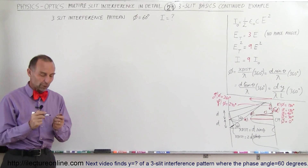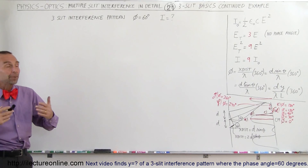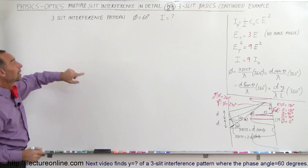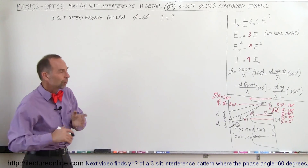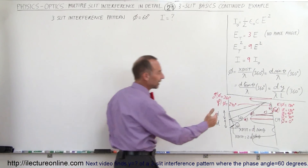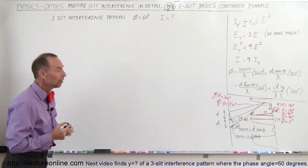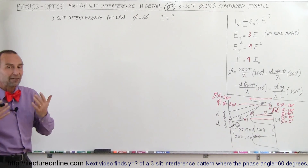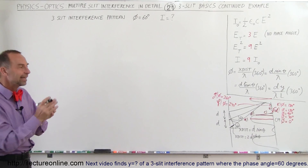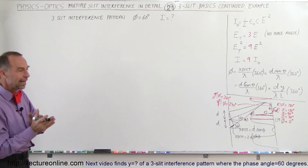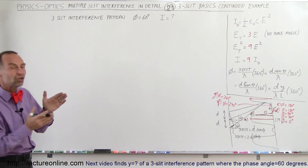Welcome to Electron Online. In this video we're going to see if we understand what we saw in the previous two videos by doing an example. We have a three-slit interference pattern, the phase angle is 60 degrees, and we're trying to find the intensity at a location on the screen at an angle so that we have a phase difference of 60 degrees between adjacent slits.